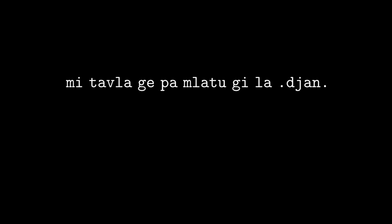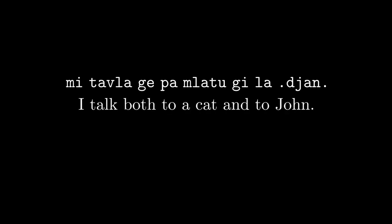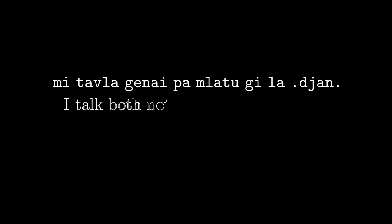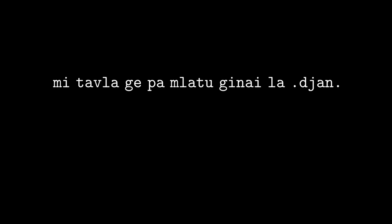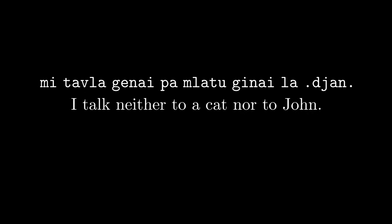To negate any part of a forethought connective, add nai to it. 'mi tavla ge pa mlatu gi la .djan.' — I talk both to a cat and not to John. 'mi tavla ge pa mlatu gi nai la .djan.' — I talk both to a cat and not to John. 'mi tavla ge nai pa mlatu gi nai la .djan.' — I talk neither to a cat nor to John.